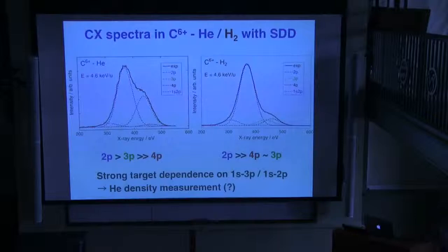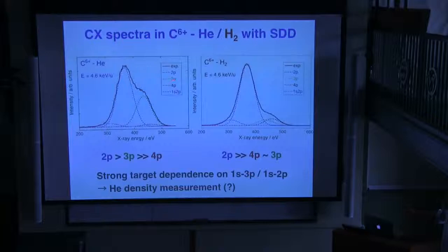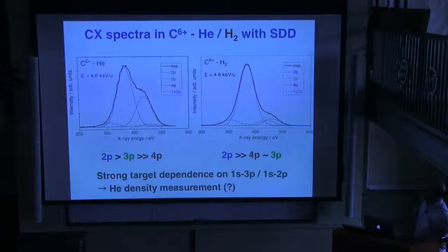Using this same detector, we measured the emission spectrum in collisions of C6+ with helium and with hydrogen. You can see clearly that helium and hydrogen at the same velocity produce a very large difference in the spectrum. In the helium case, the 1s–3p transition is very strong, but in the hydrogen case it is very weak. Such a large difference might be useful to estimate helium density in astrophysical measurements.